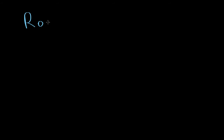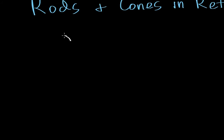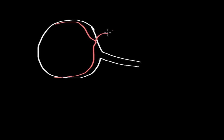Let's look at how rods and cones are distributed in the retina. Let me begin by drawing a very simplified diagram of the eyeball. In the back of the eye we have the optic nerve exiting and going towards the brain. The back of the eyeball is coated by a specialized membrane known as the retina. This dimpled portion of the retina is known as the fovea. The part of the retina directly in front of where the optic nerve exits the back of the eye is known as the blind spot.